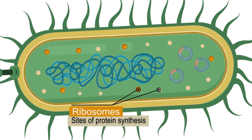Another structure found in bacterial cells are ribosomes. Ribosomes in bacterial cells are typically smaller than those in eukaryotic cells. Their main function is the translation of genetic codes from messenger RNA, or mRNA, into proteins. They are considered the factory of proteins.